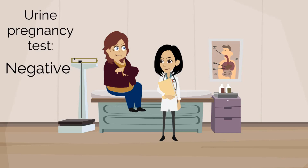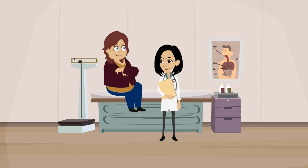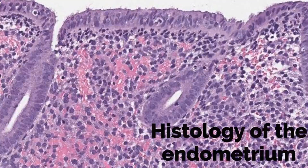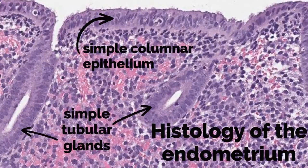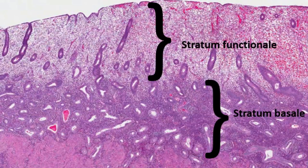To really understand abnormal bleeding, it's important to first understand what's normal. Let's review the normal histology of the endometrium. The endometrium is hormonally active and composed of simple columnar epithelium with simple tubular glands. Zooming out, you can see it is composed of two layers: the stratum functionelle and the stratum basale.